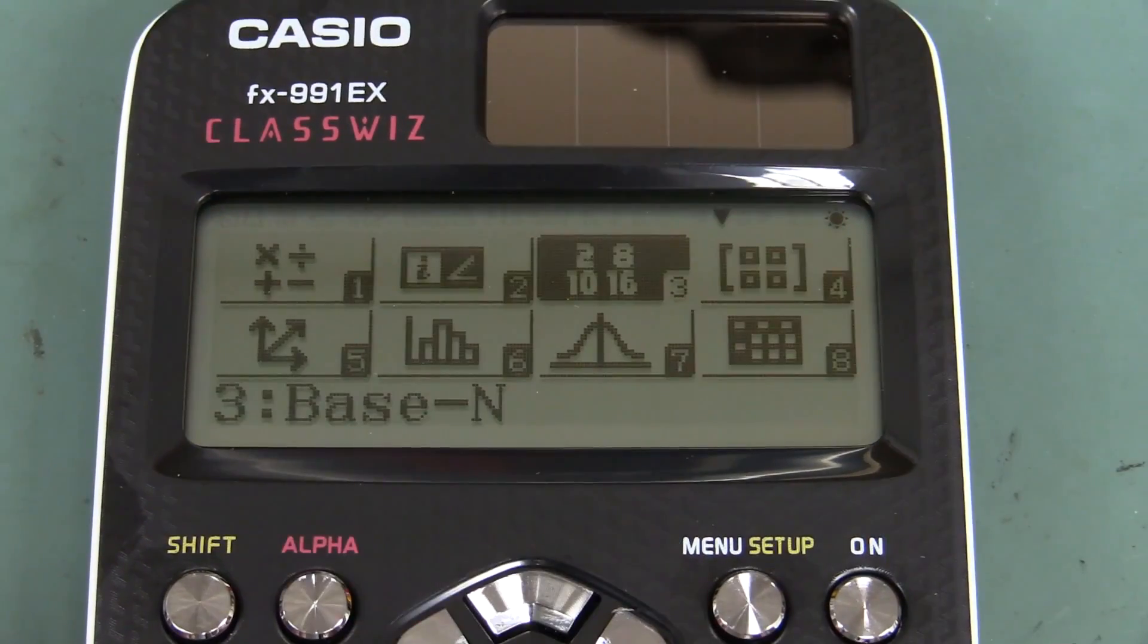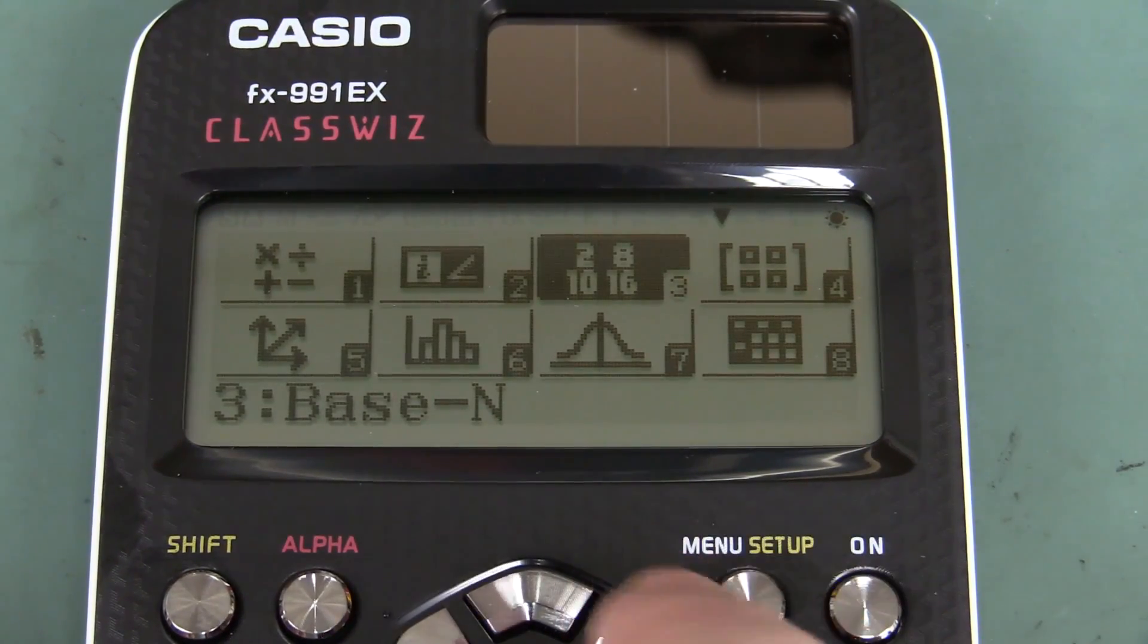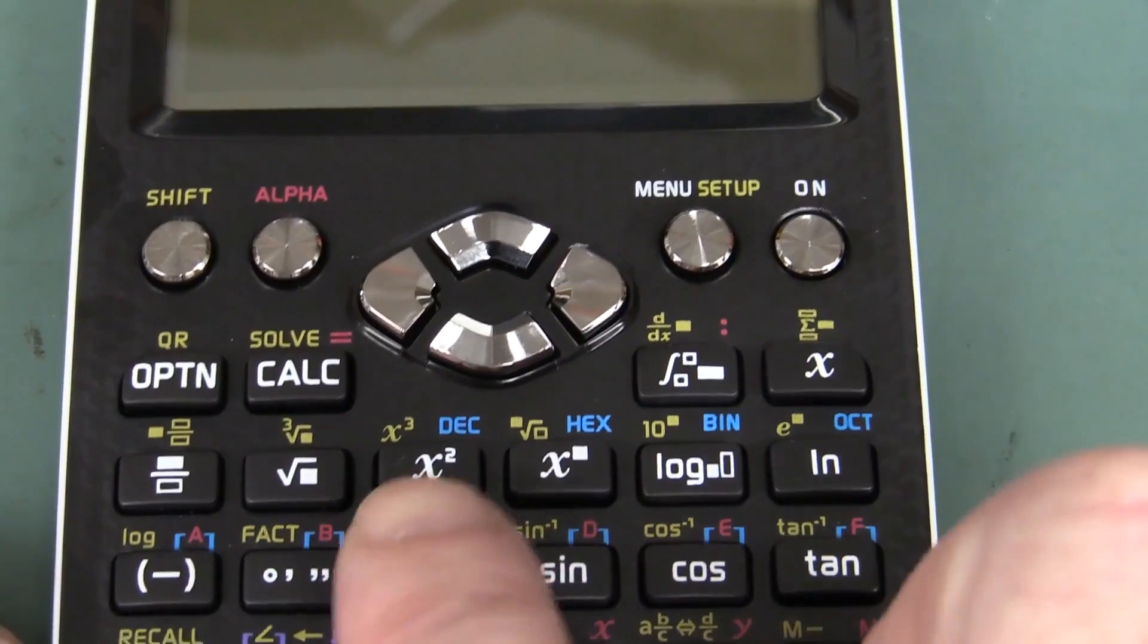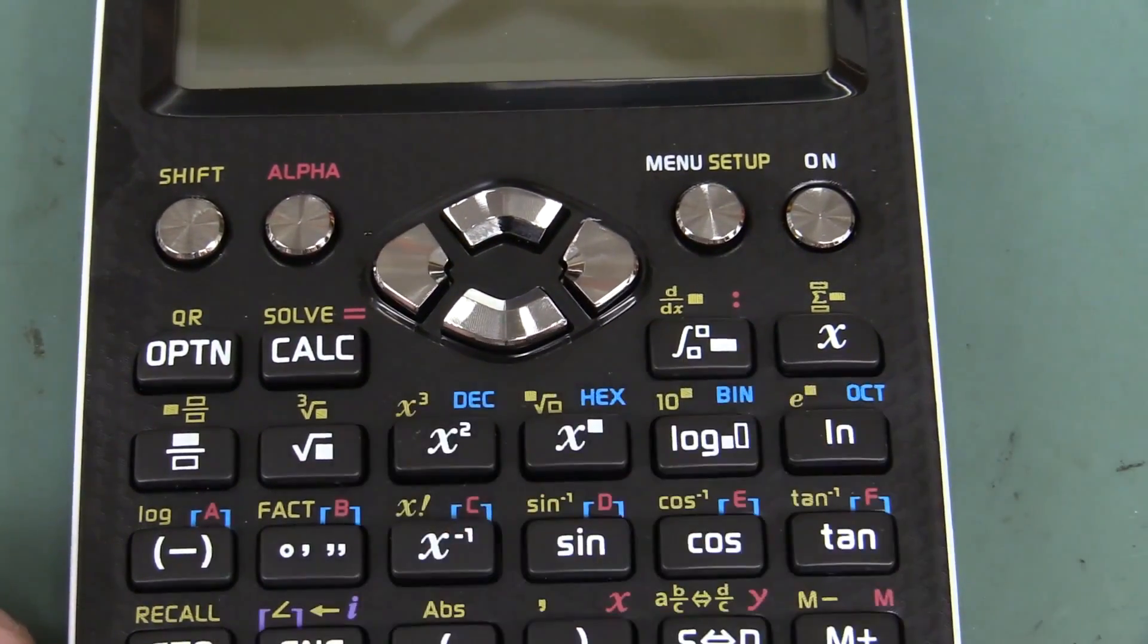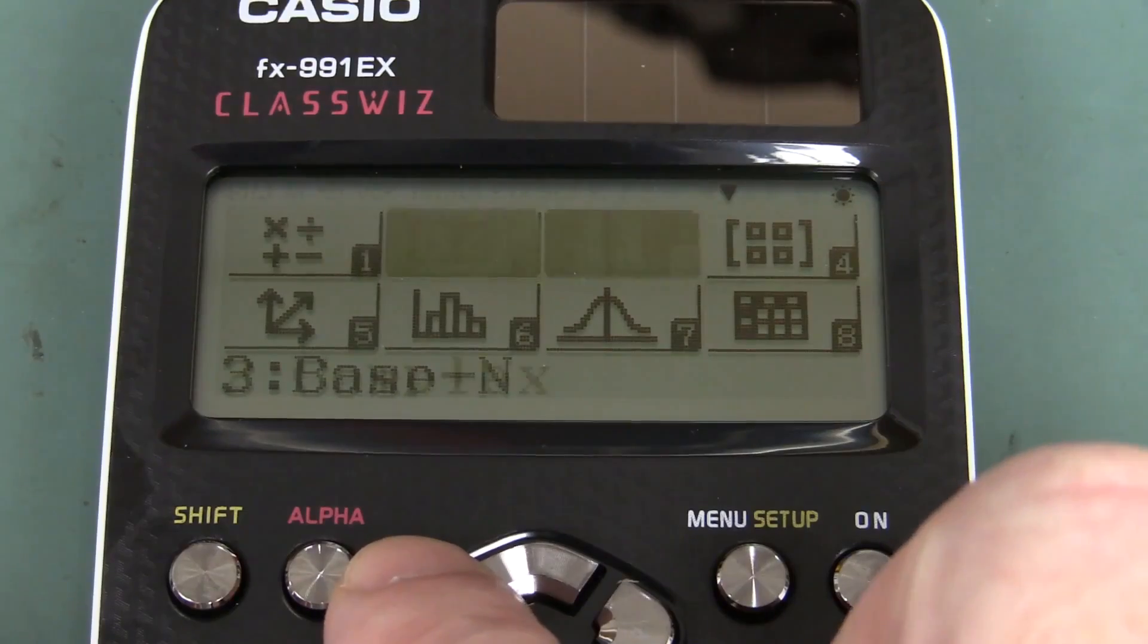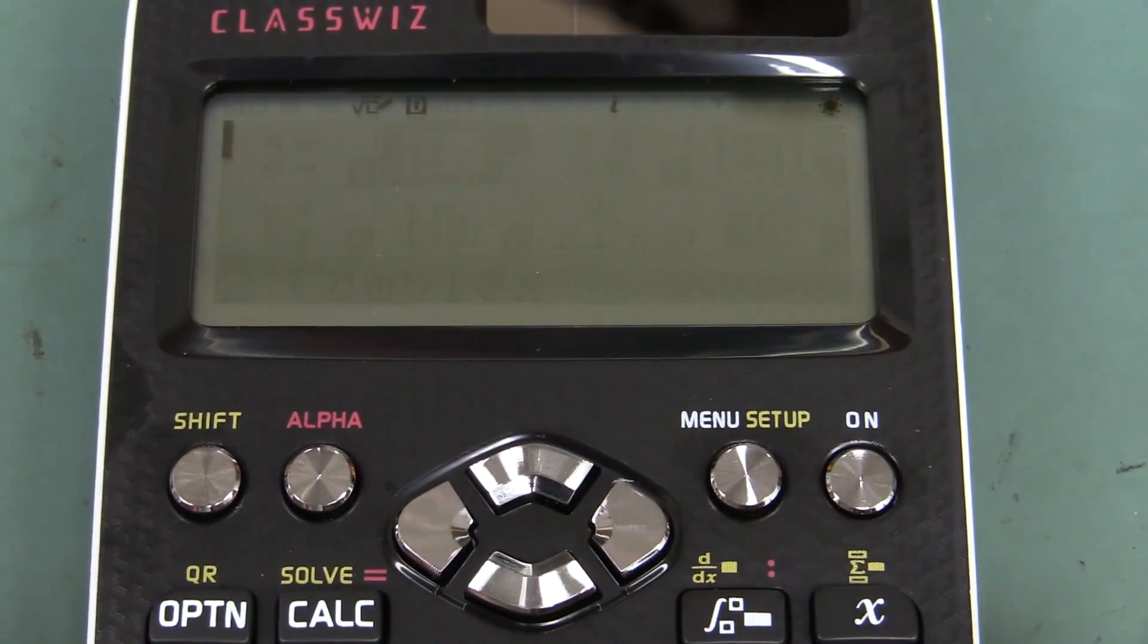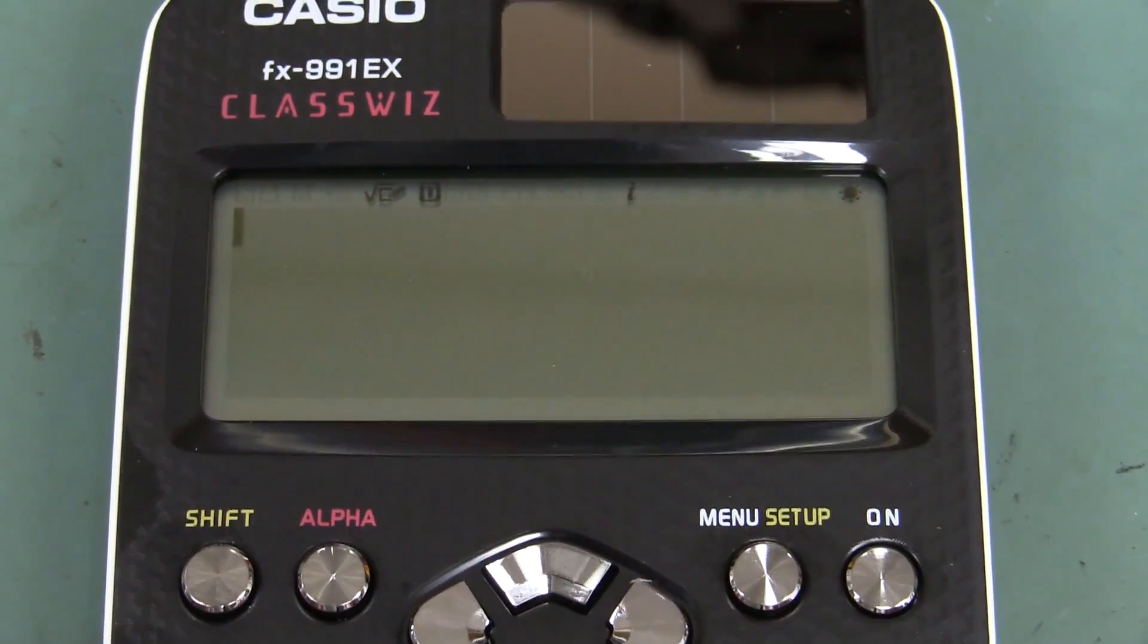And for all you number system aficionados, of course, we do have all sorts of base-end calculations, all that sort of jazz. It does have decimal hex binary octal directly on the keypad, beauty. And my favorite, complex numbers. I love complex numbers, woohoo! We're in complex number mode, terrific.